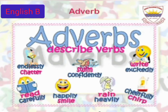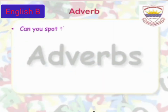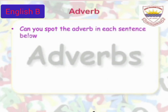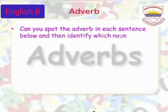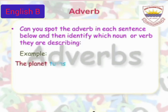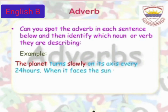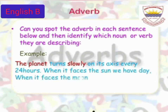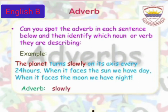So those were some examples of adverbs. Now let's move on to the next slide. Can you spot the adverb in each sentence given below and identify which noun or verb they are describing? Let's look at some sentences. The planet turns slowly on its axis every 24 hours. When it faces the sun, we have day. When it faces the moon, we have night. In this paragraph, the adverb is slowly.